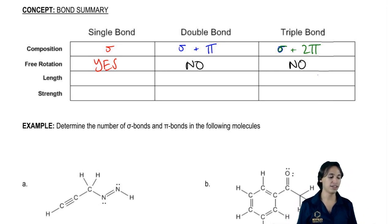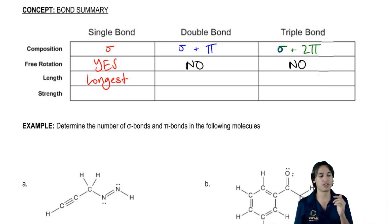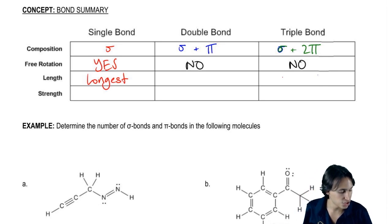Now you guys understand the only ones that rotate are the single bonds. Now let's talk about length. Hopefully, you guys should remember what I talked about with sigma versus pi. Which one was the longer one? Sigma is the longest. So single bond would be my longest.